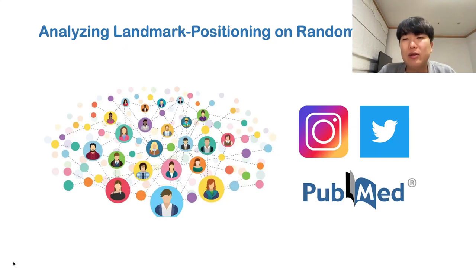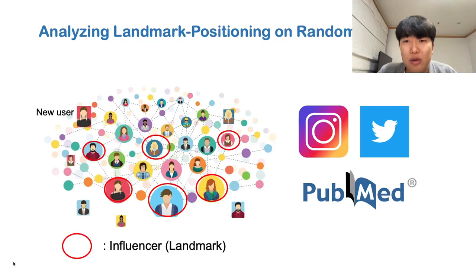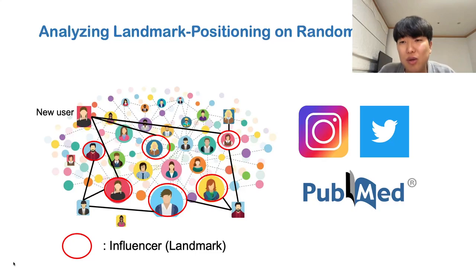We would like to answer these questions by analyzing well-known models of random graphs. Real-world graphs such as Instagram, Twitter, and PubMed have interesting structures. For example, new users joining the graph are more likely to connect to influential nodes. This property is called preferential attachment. Using the theory of network science, we analyze landmark-based positioning strategy for random graphs with such properties.